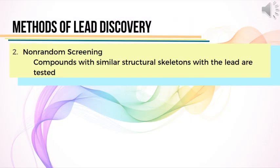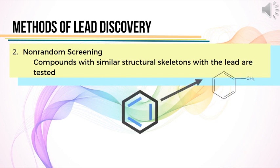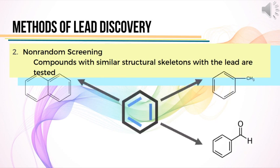Non-random screening is a modified form of random screening which was developed because of budgetary and manpower constraints. In this method, only compounds having similar structural skeletons with that of the lead are tested.